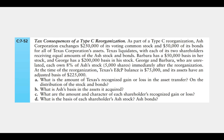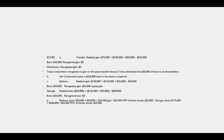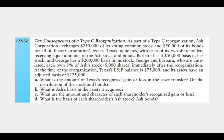Part (b): What is Ash's basis in the assets it acquired? Ash takes a carryover basis — the target's $225,000 adjusted basis in the assets now becomes Ash's basis, because the target did not recognize any gain.